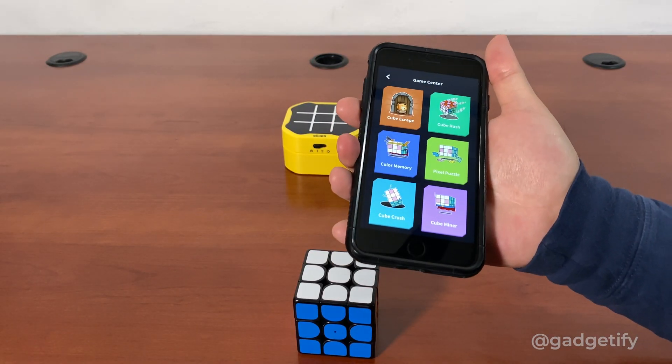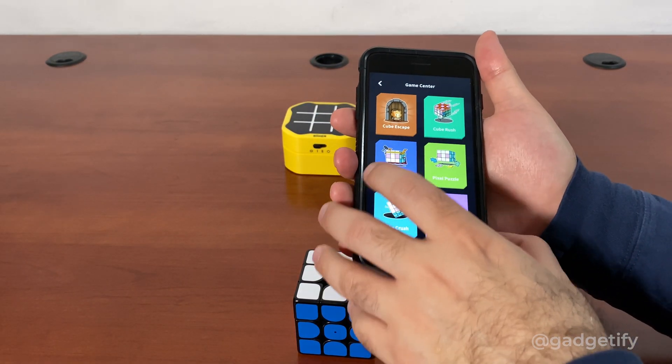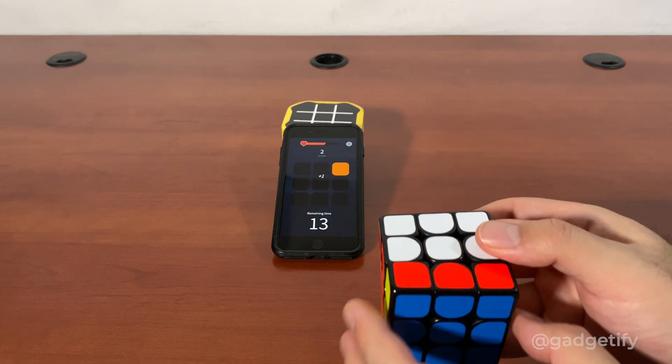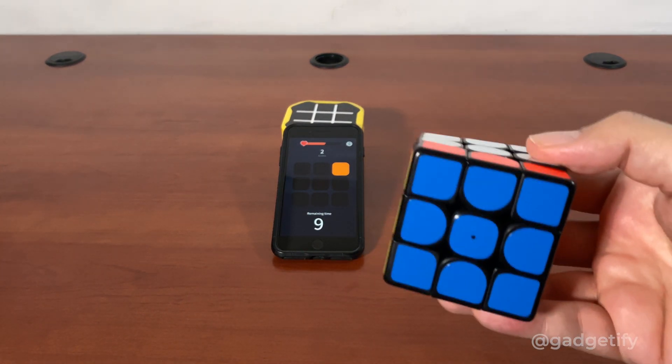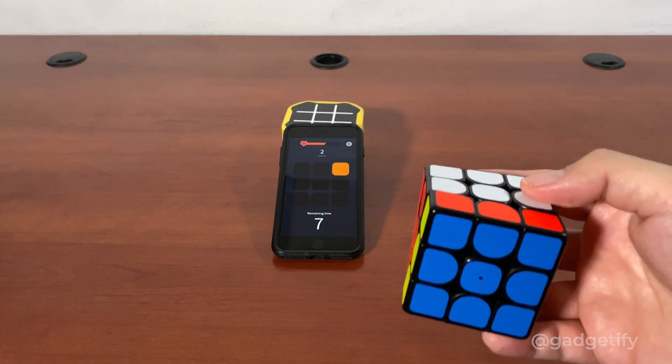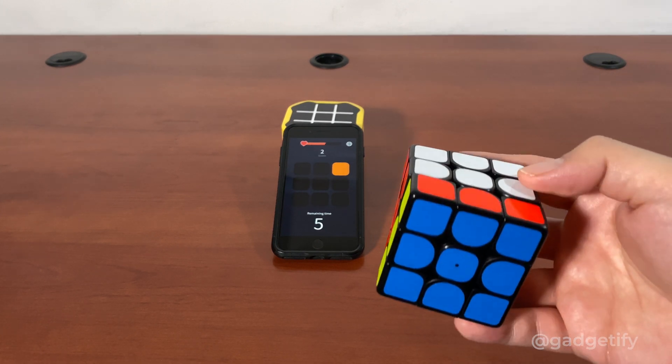There are games for you to play. For example, Color Memory. This helps you master the colors. So when I do that, it actually registers it there. So this helps you to get a bit of understanding for the cube and get to know it inside and out.